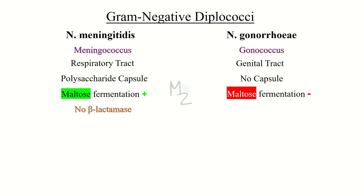Neisseria meningitis produces no beta-lactamase, but Neisseria gonorrhea does — it has penicillinase-producing strains. That's why Neisseria gonorrhea is resistant to penicillin, while Neisseria meningitis is not resistant to penicillin.